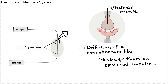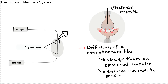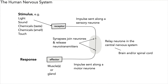However, the synapse has quite an important role in that it allows the impulse to travel one way only, in one direction only. The synapse ensures the impulse goes one way only — we don't want impulses going in the wrong direction. This has been an overview of the human nervous system. Thank you for watching and I'll see you soon.